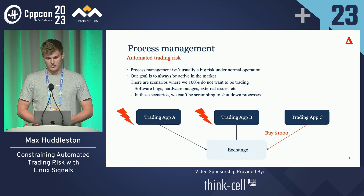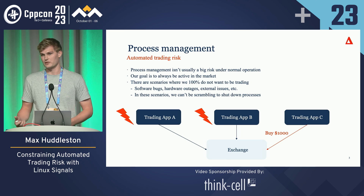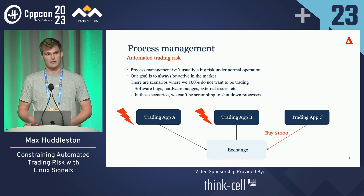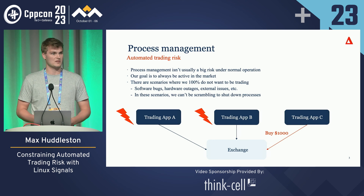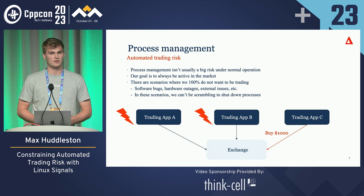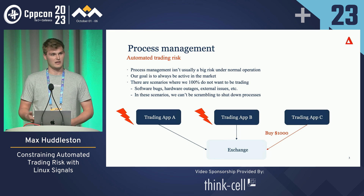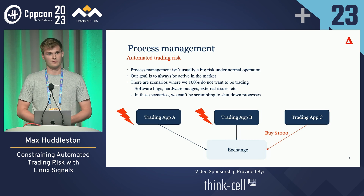The majority of this talk will be about process management. For a trading firm like Optiver, this is relatively straightforward. We trade on different exchanges and markets, and these only have a certain time period that they're open during the day. So we can just bring up our core trading processes before the market opens, run them throughout the day, and then after the market closes, bring them down and do any releases and upgrades we need to. As a market maker, we make money by being in the market and actively trading, so it's our number one goal to always be active and make sure our processes stay in.